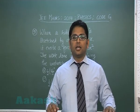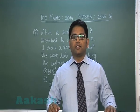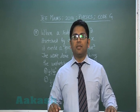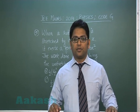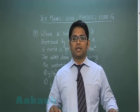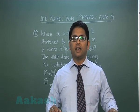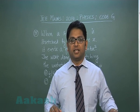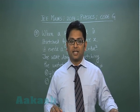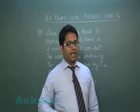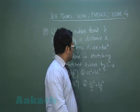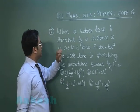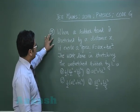Hello students, today we are going to solve the JEE Main 2014 Physics paper. We are here to discuss Code G, so let's begin. The first question in the physics paper for Code G is question number 31.